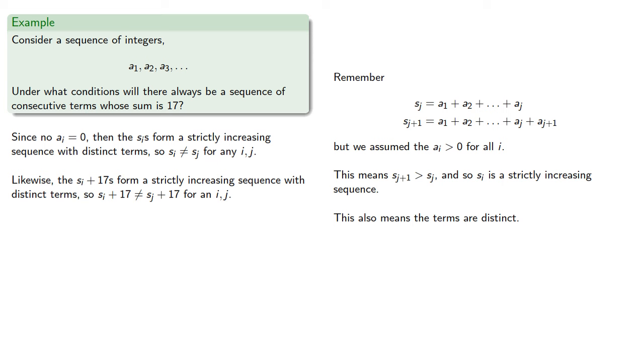And so si is sj plus 17 for some i and j, and consequently their difference is 17.